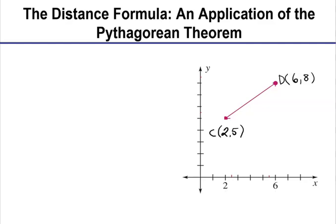For instance, the distance formula. Right now, we're going to try to build the distance formula from this problem right here, and then write a generic formula that we can use every time. Our goal in this problem is to find the distance between the point C, which is (2, 5), and this is in an xy-axis. We go over to x equals 2 and up 5.